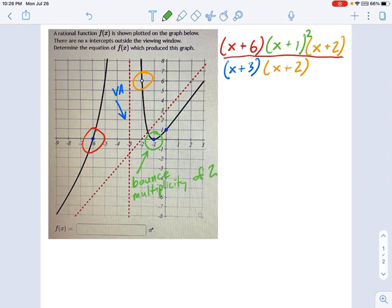And now we've got a problem, because if you count up your factors on top, we've got 1, 2, 3, 4 factors on top, and 2 factors on bottom. And that does not produce an oblique asymptote. Remember, the top needs to be exactly one factor more than the bottom. So where's that extra factor coming from?